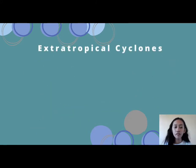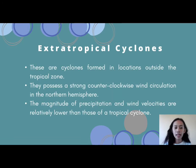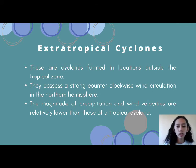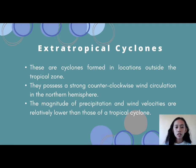Extra-tropical cyclones are cyclones formed in locations outside the tropical zone. They possess strong counterclockwise wind circulation in the northern hemisphere, and the magnitude of precipitation and wind velocities are relatively lower than those in tropical cyclones. This type of cyclone does not do as much damage to people's lives.